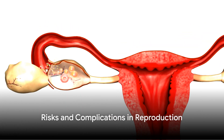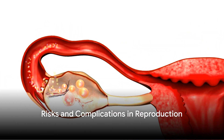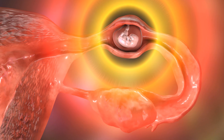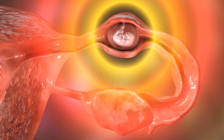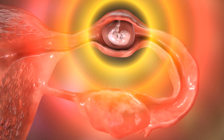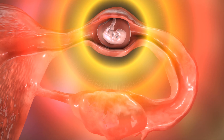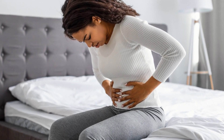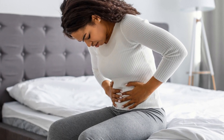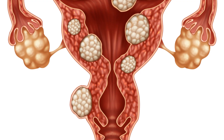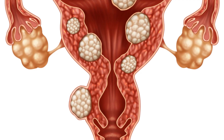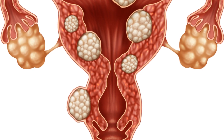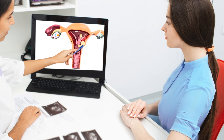Reproduction is not without its risks and complications. Early or teenage pregnancy, abortion, ectopic pregnancies, breech birth, and stillbirth are all potential issues. Also, fibroids — those non-cancerous growths that develop in or around the uterus — may get in the way of conception.